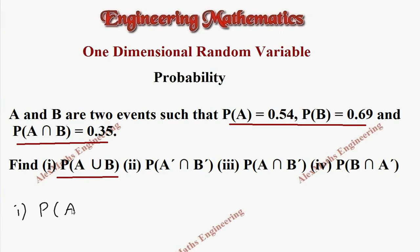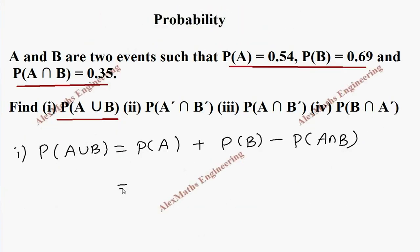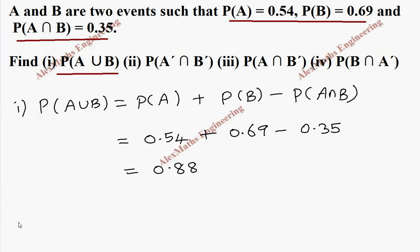It means 0.54 plus 0.69 minus 0.35. After calculation, the value is 0.88. Then coming to subdivision B, this is P of A dash intersection B dash.